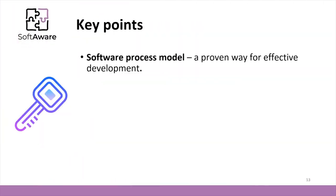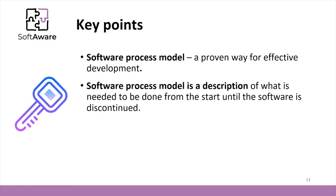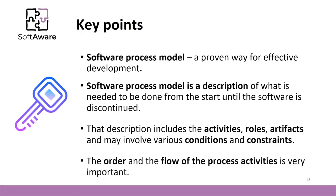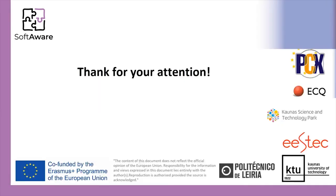The software process model represents a proven way for effective development. It is a description of a path of what needs to be done from the start until the software is discontinued — that description might include texts, diagrams, and other materials. The description usually includes activities, roles, artifacts, and may involve various conditions and constraints. The order and the flow of the process activities are extremely important — it is the main difference between the software process models. Thank you for your attention.